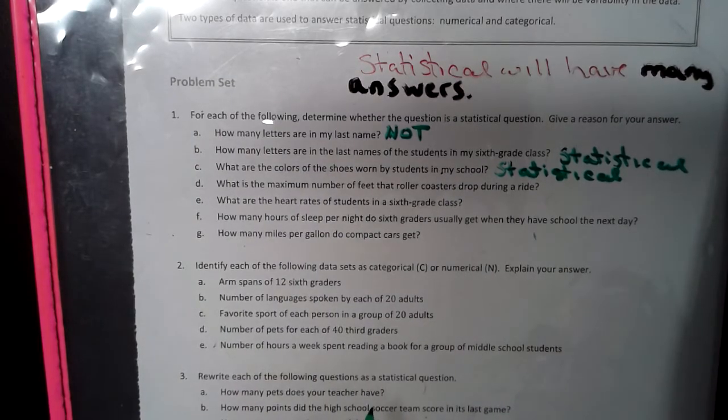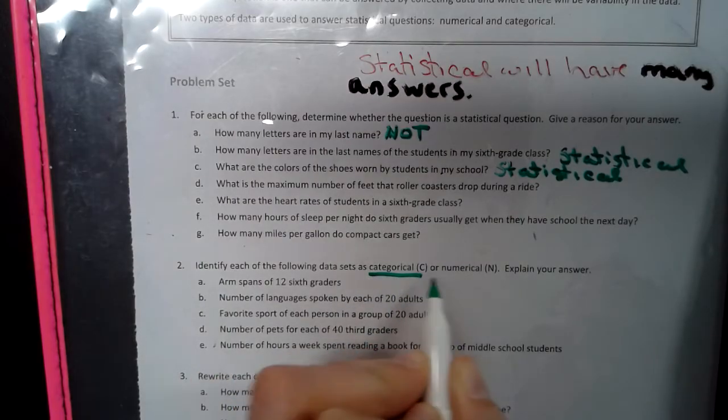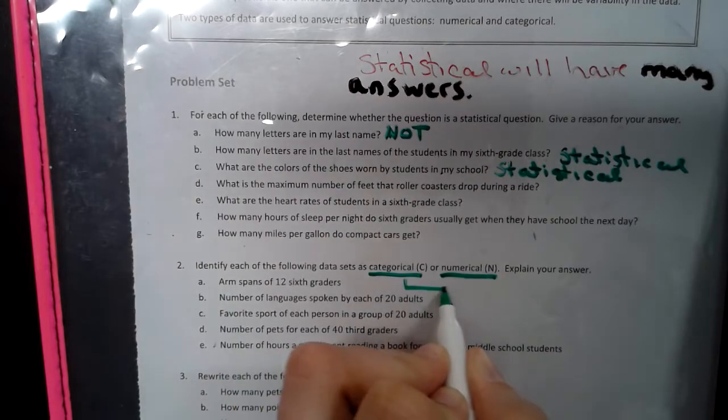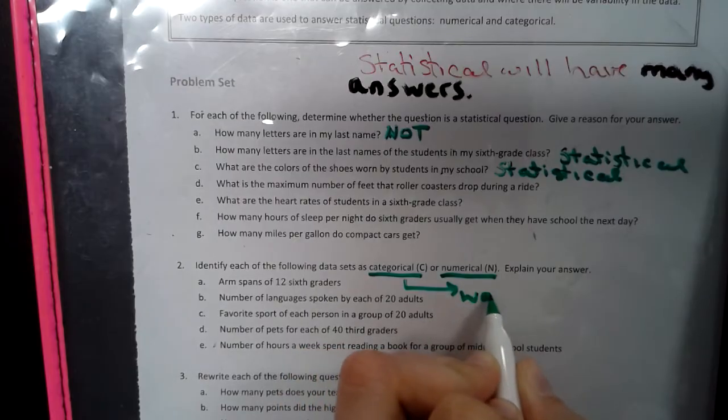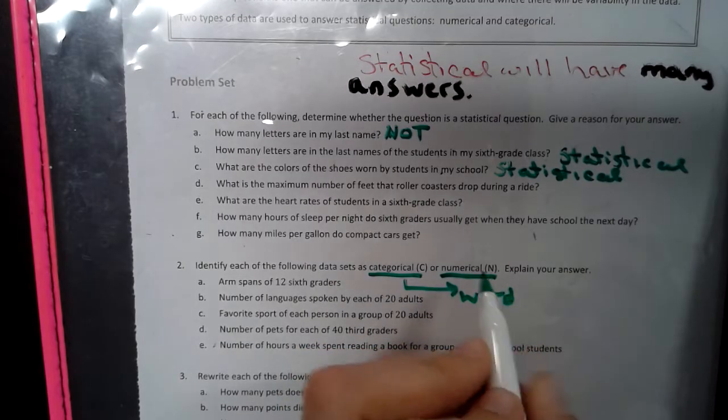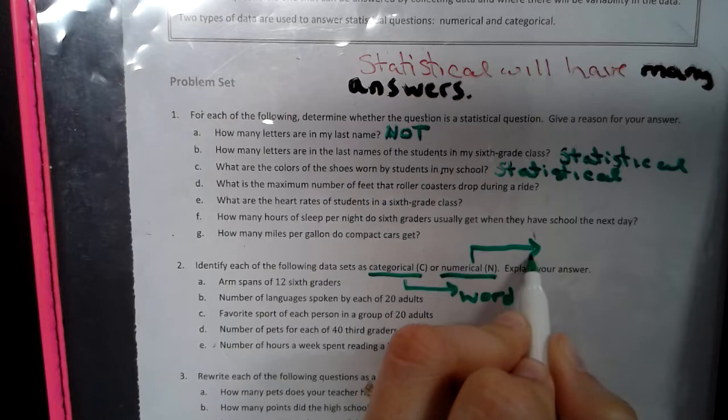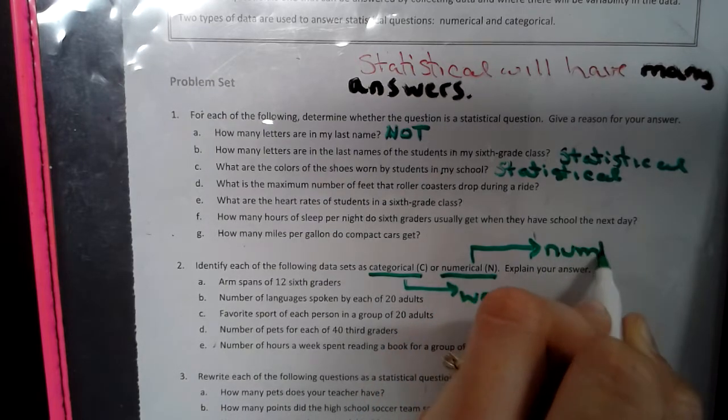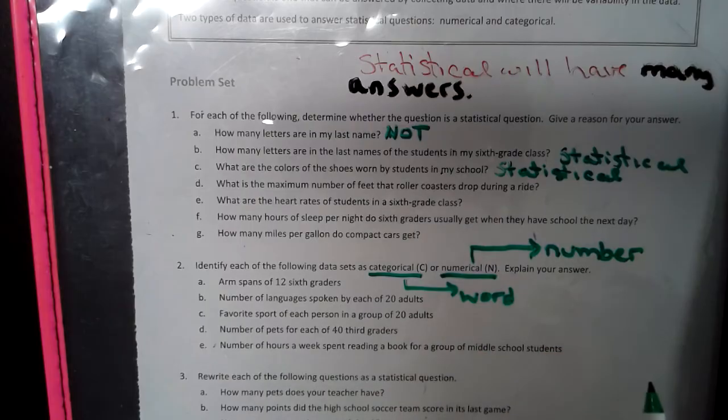So looking later on, we're going to see two more important words, and that is categorical and numerical. So categorical is a word answer. So categorical means a word is going to answer that question. Whereas numerical, let's think about that word, yes, a number will be the answer to that style question.